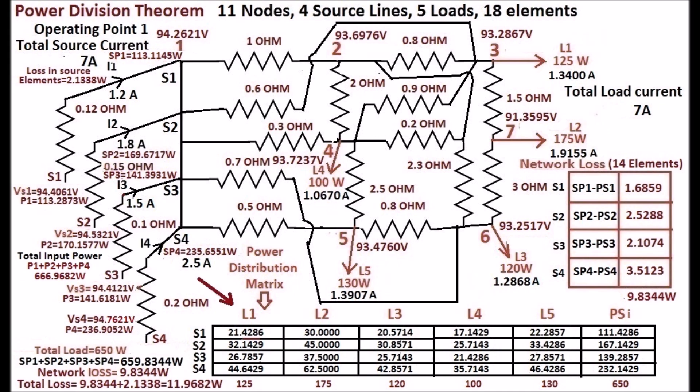Sharing of sources and loads is shown in the power distribution matrix. Note that the network loss is 9.8344 watts for a total load of 650 watts.